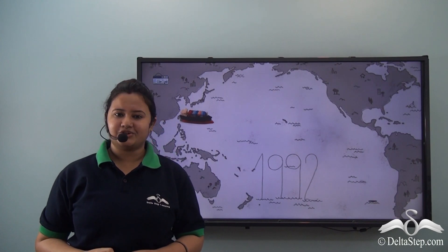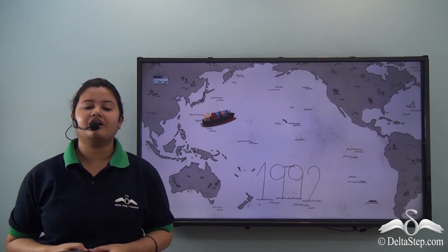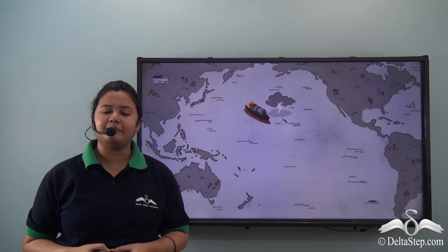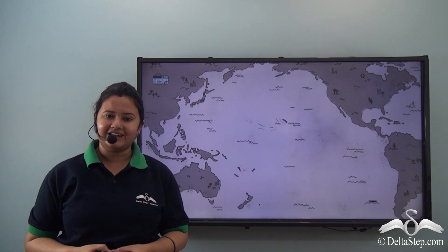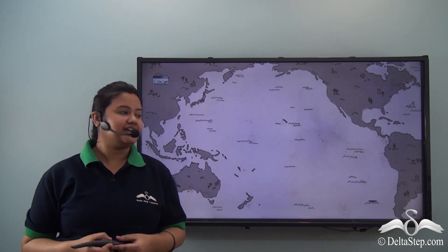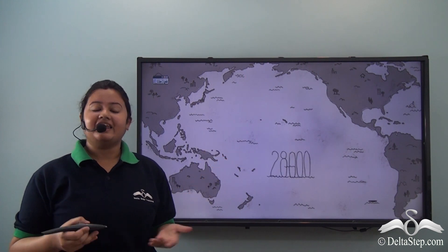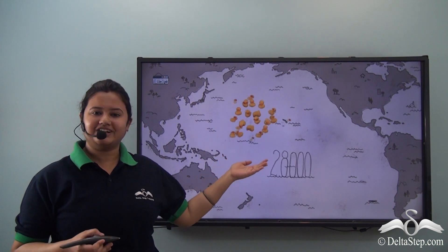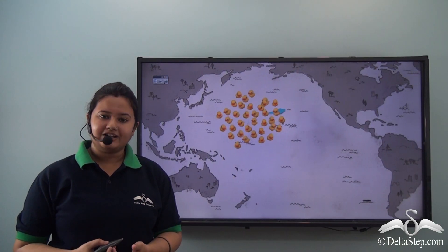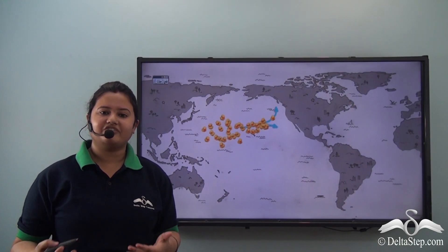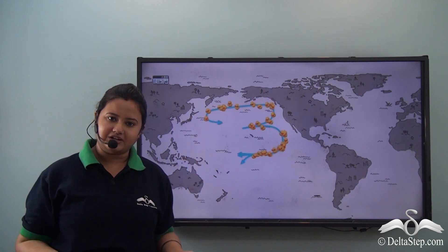Let me tell you a story. In 1992, a cargo ship containing rubber ducks was struck by a storm and it sank into the North Pacific Ocean. These 28,000 ducks did not stick together but were washed away by waves to places all over the world.